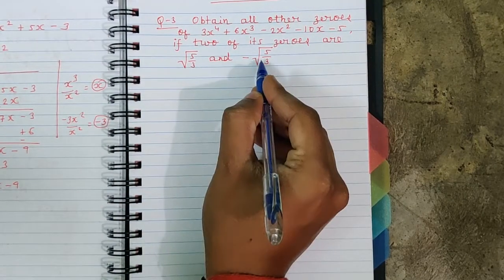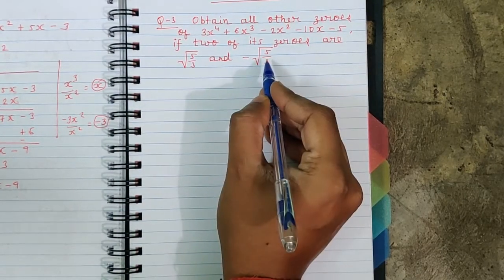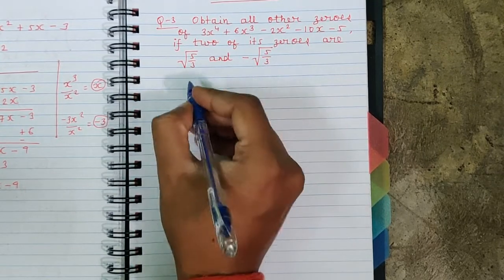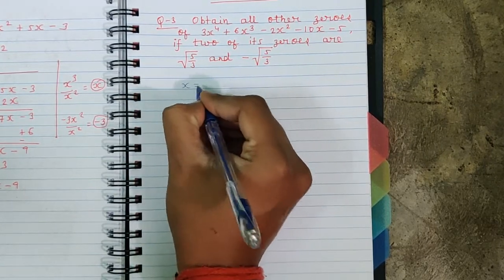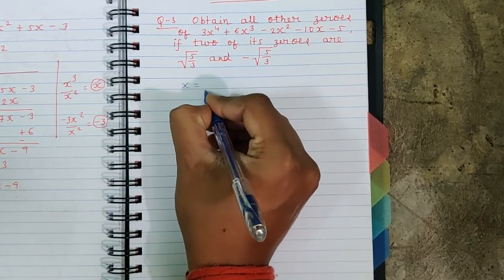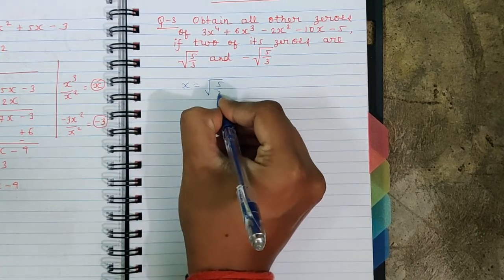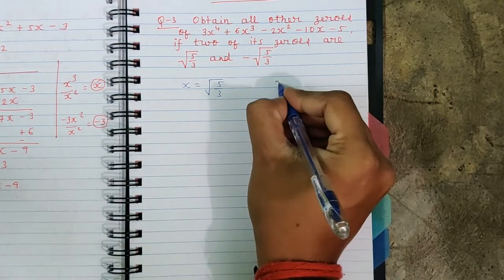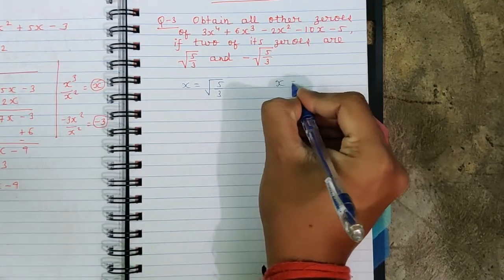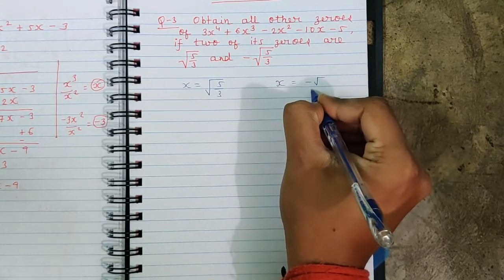Out of the four zeros, two are given: √(5/3) and -√(5/3). We need to find the other two zeros. Now, if one zero is √(5/3) and another zero is -√(5/3), that means x = √(5/3) and x = -√(5/3).